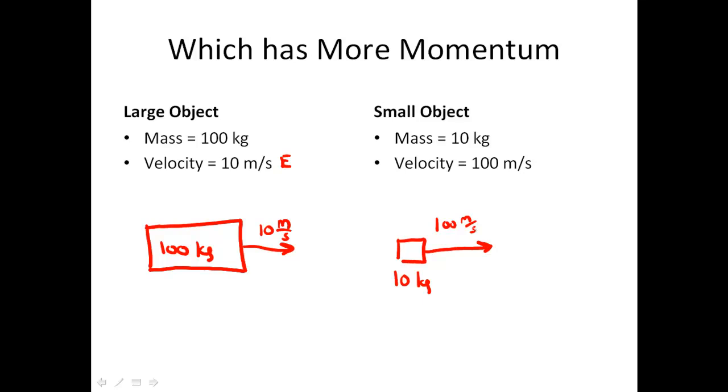So which object would have a greater momentum? And you have to actually stop and think about this. It's possible for small objects to have greater momentum than large objects, meaning that smaller object will be more difficult to stop than the large object. So let's crunch the numbers. That's the only way we're going to find out. We represented momentum with the letter P. Now P is going to be equal to 100 kilograms times 10 meters per second, and my momentum is going to be 1,000 kilograms times meters per second.